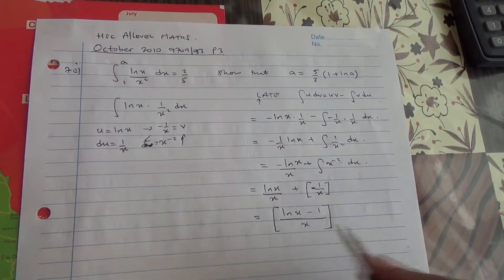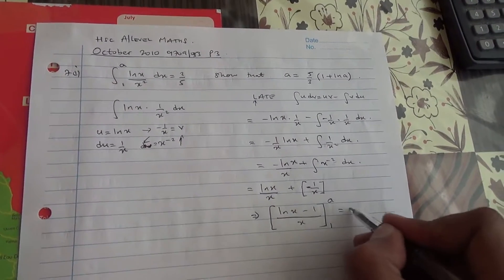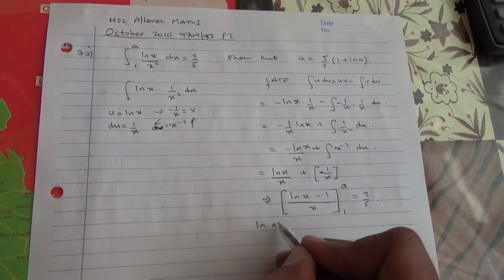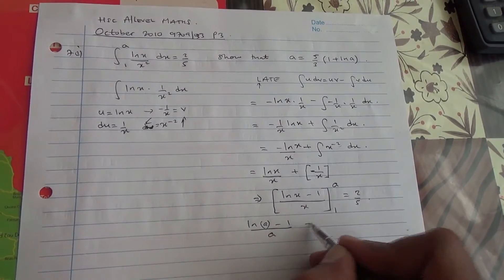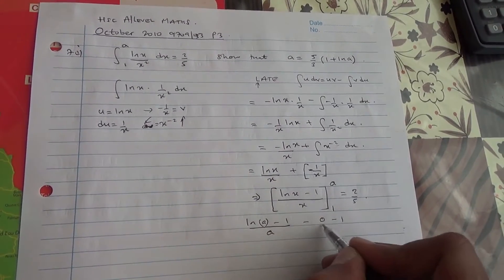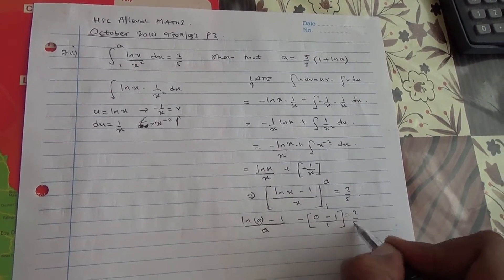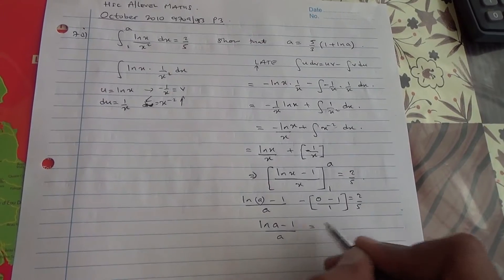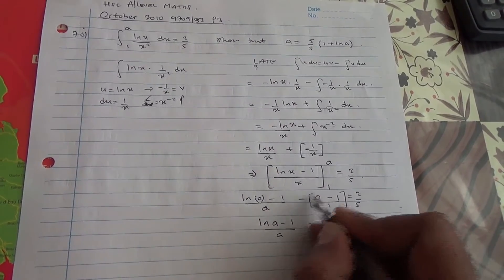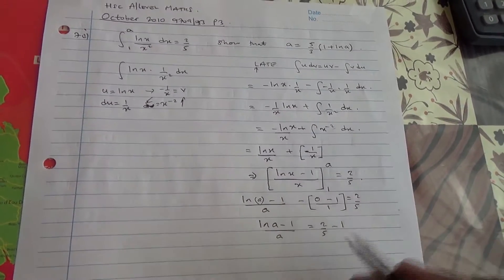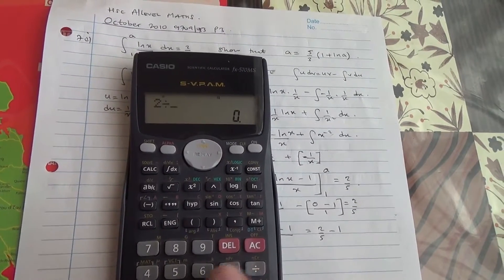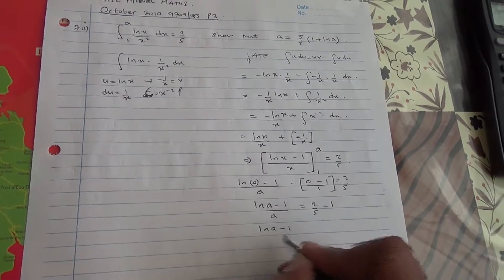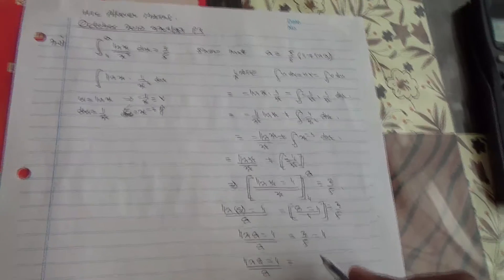Now we apply the limits a and 1, and set this equal to 2 fifths. Substituting a gives minus ln(a) minus 1 over a, minus substituting 1, which gives ln(1) equals 0, minus 1 over 1. This equals 2 over 5. So we have minus ln(a) minus 1 over a equal to 2 fifths. Sending the plus 1 to the other side: 2 fifths minus 1 equals minus 3 over 5. Therefore minus ln(a) minus 1 over a equals minus 3 over 5.